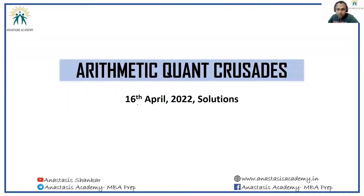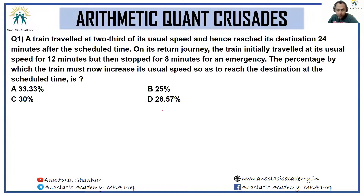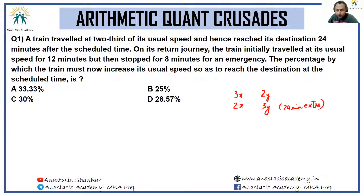Let's look at the solutions for the arithmetic quiz of 16th April. A train traveled at two-thirds of its usual speed and hence reached its destination 24 minutes after the scheduled time. If the ratio of speeds is 3x and 2x, the ratio of times will be 2y and 3y, and this difference is 24 minutes extra — meaning the time taken at usual speed is 48 minutes and at reduced speed is 72 minutes.